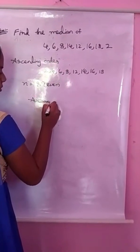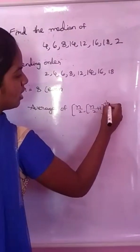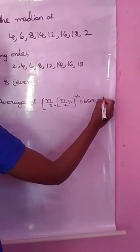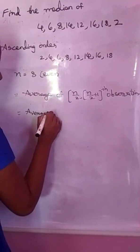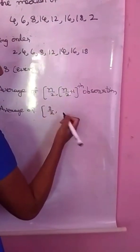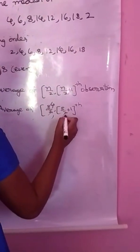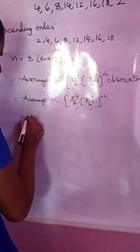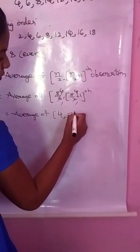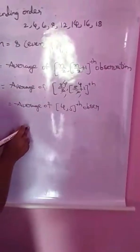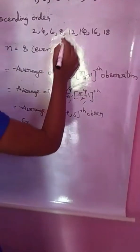Average of N by 2 and N by 2 plus 1st observation. N is 8. So 8 by 2 and 8 by 2 plus 1, which is 4 and 5. The 4th observation is 8, and the 5th observation is 12.